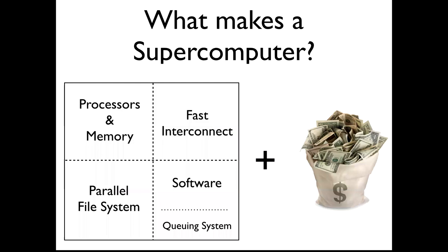What makes a supercomputer? It is made of processors, memory, a fast interconnect, a parallel file system, software, and — well — you need a lot of money. From all these items, which is the most important one? In my opinion, the most important ingredient is money. How much money do you have? That defines what you can afford and buy. Vendors are always happy to sell you hardware, but do you have the money to pay for it?